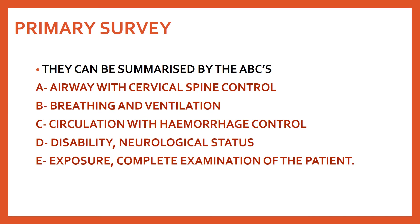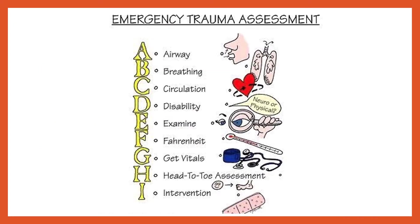During the rapid primary survey, life-threatening conditions are recognized and treated without delay. These are summarized by the ABCs — an assessment from A to I. A is for airway, B is for breathing, C is for circulation, D is for disability (which includes the Glasgow Coma Scale, covered in the last video), E is for examining, F is for Fahrenheit, G is for get vitals, H is for head-to-toe assessment, and I is for intervention.